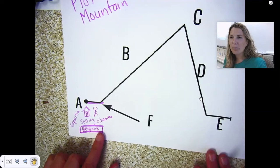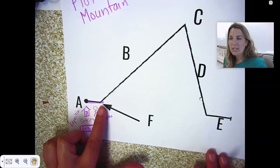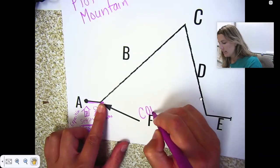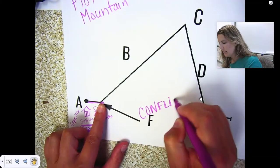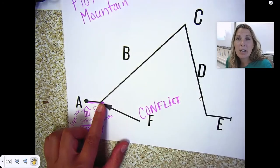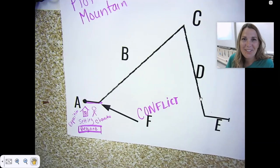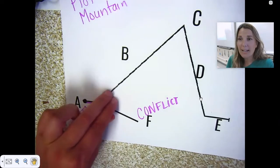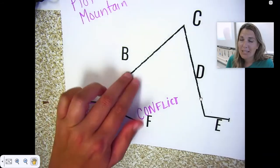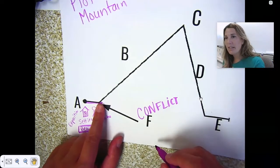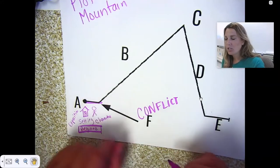The next part of the plot doesn't start until after you identify the conflict. Once you read what the conflict is — the problem, the struggle for the protagonist, for the main character — that's when you start walking up and climbing up plot mountain.